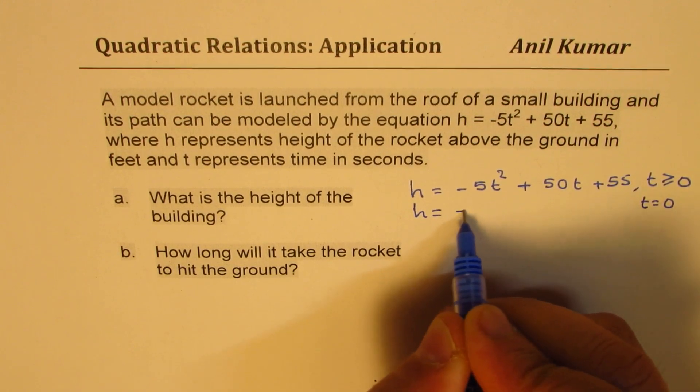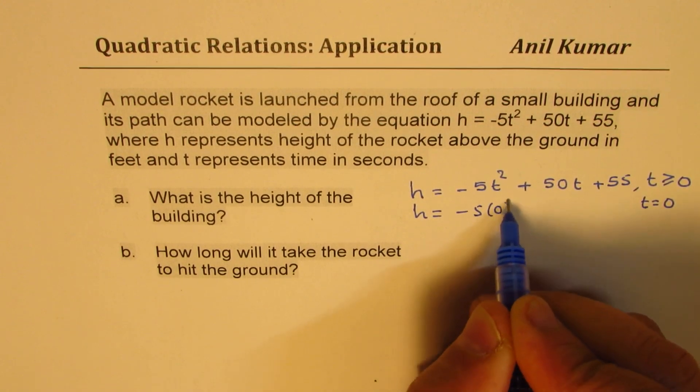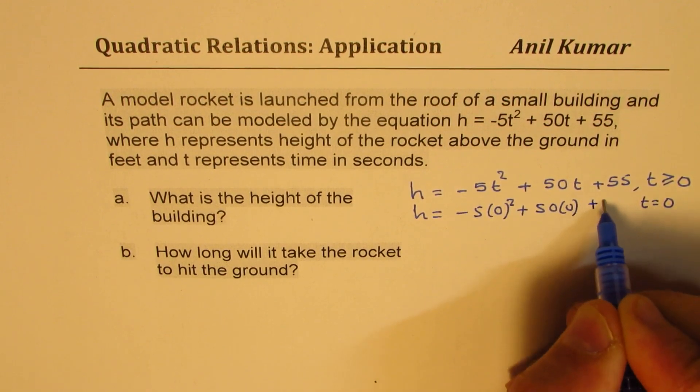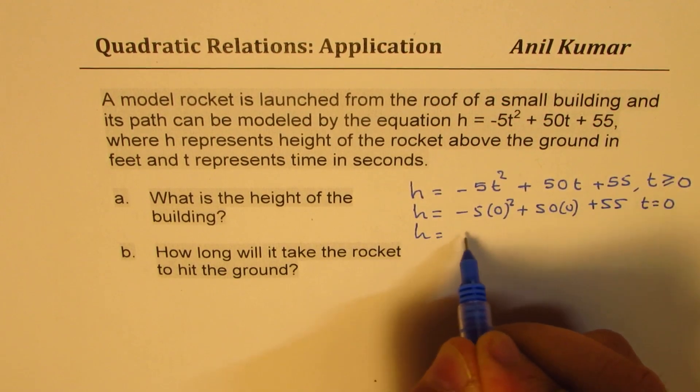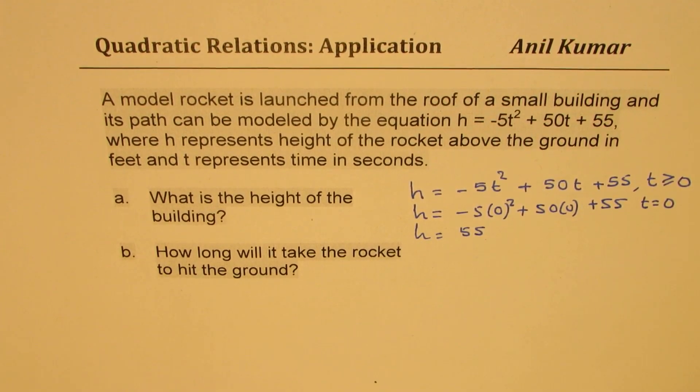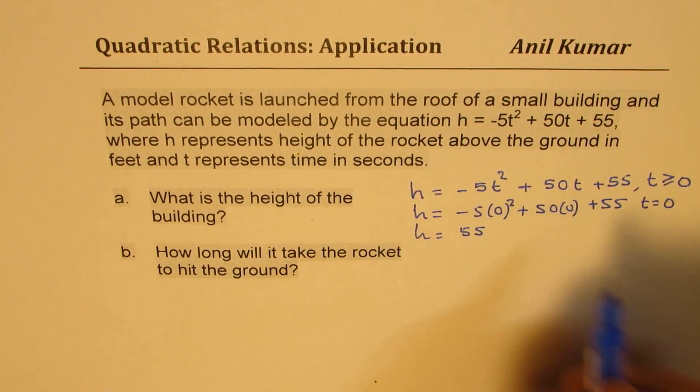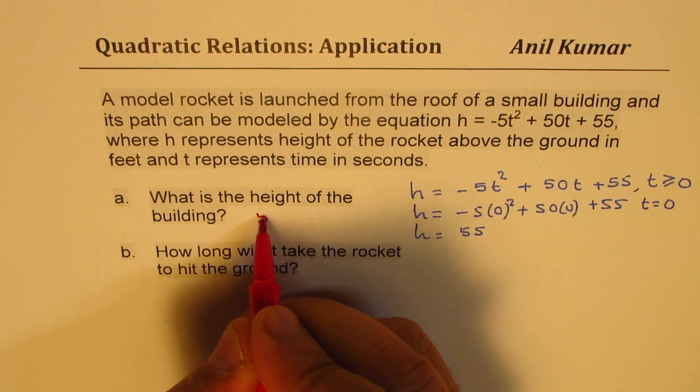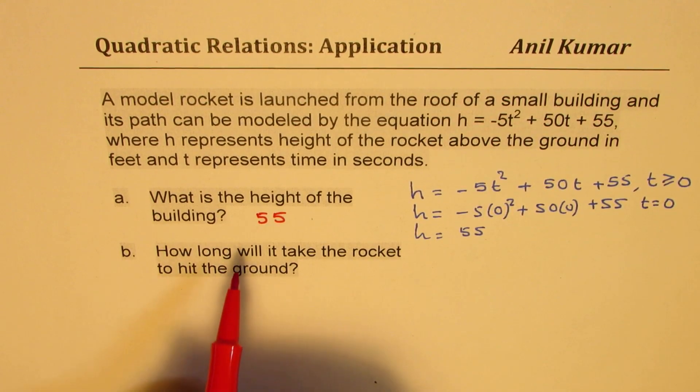Height will be minus 5 times 0 squared plus 50 times 0 plus 55. So 55 is basically the Y intercept or H intercept in this case. The answer for this is that the height is going to be 55 and always look into the units.